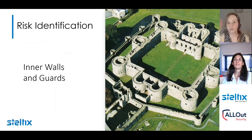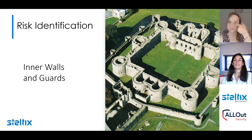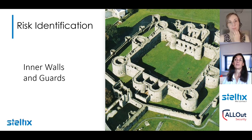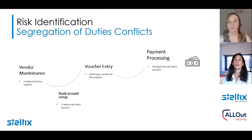Now that we know how to prevent risk, what about how to identify when risk already exists? Let's start with our next topic: risk identification. Continuing our tour inside the castle, in any regular castle we will have inner walls and guards to control that there aren't any intruders going inside restricted rooms. Walls will limit actions and guards will mitigate risk.